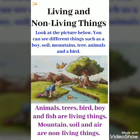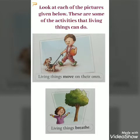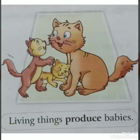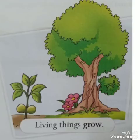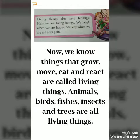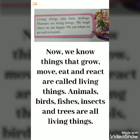Let us find out why. Look at each of the pictures given below. These are some activities that living things can do. Living things move on their own. Living things breathe. Living things eat food. Living things produce babies. Living things grow. Living things also have feelings. Humans are living beings — we laugh when we are happy, we cry when we are sad or feel pain. Things that grow, move, eat and react are called living things. Animals, birds, fishes, insects and trees are all living things.